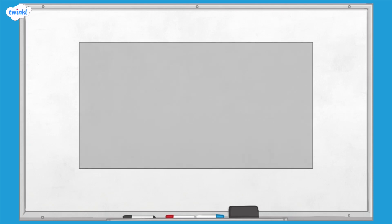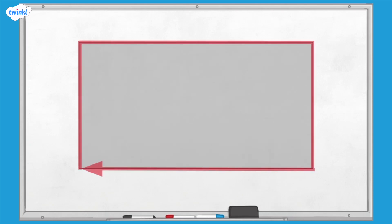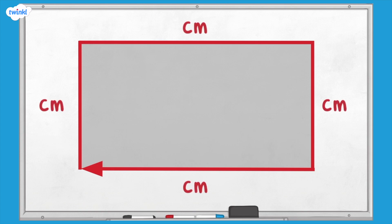The perimeter of a shape is the distance around the outside of the shape. It is measured using units of length, such as centimetres and metres. The area of a shape is the amount of space inside the shape. Area is measured in squared units of length, such as centimetres squared and metres squared.